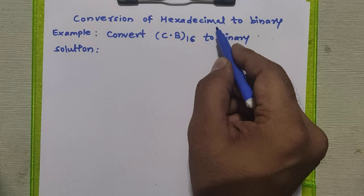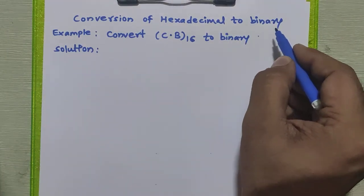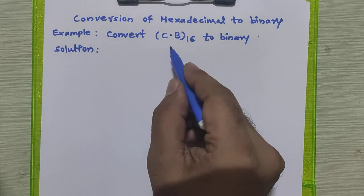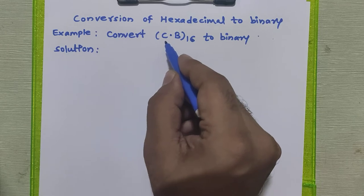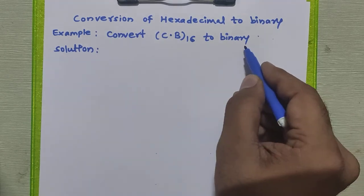Friends, in this video we are going to study how to convert any hexadecimal number to binary number. Consider the example given to us, we want to convert C.B in hexadecimal to binary.